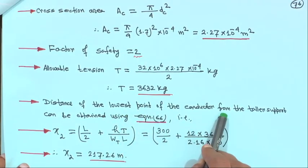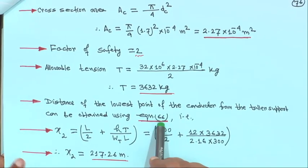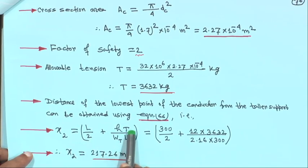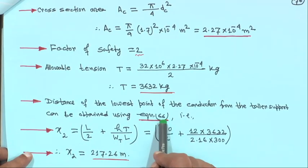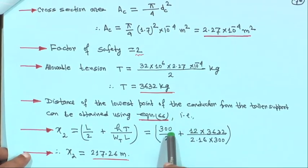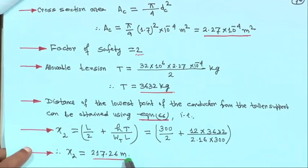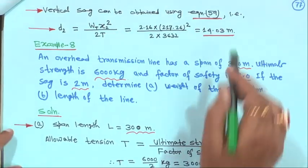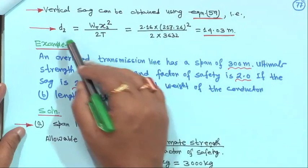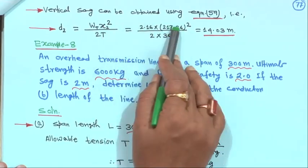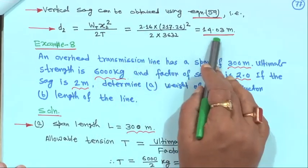Distance of the lowest point of the conductor from the taller support can be obtained using equation 66: x2 is equal to L by 2 plus h·T upon Wt·L. Substituting: 300 by 2 plus 12 into 3632 divided by 2.16 into 300, giving x2 equal to 217.26 meter. Vertical sag using equation 59: D2 is equal to Wt·x2 squared upon 2T, which is 2.16 into 217.26 squared divided by 2 into 3632, giving 14.03 meter.